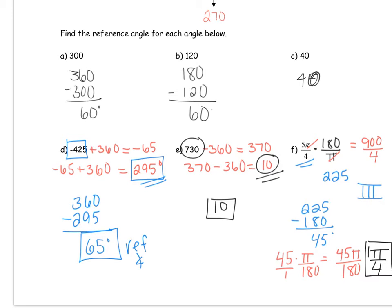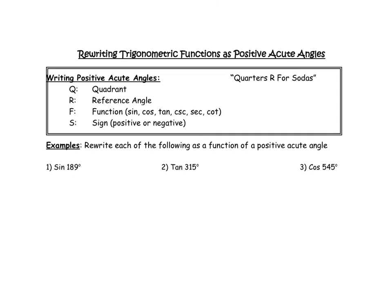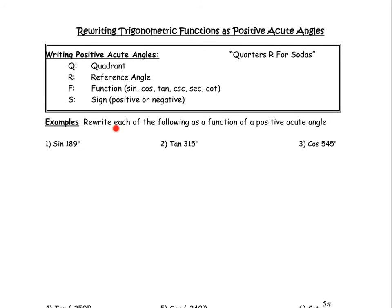Now why did I spend so much time reviewing reference angles? Because they're going to be helpful for writing positive acute angles. The directions are: rewrite each of the following as a function of a positive acute angle. We need to take a few things into consideration: the quadrant, the reference angle, the type of function, and whether that function is positive or negative in the respective quadrant. The acronym is QRFS — 'quarters are for sodas.'